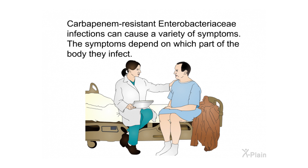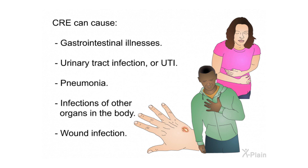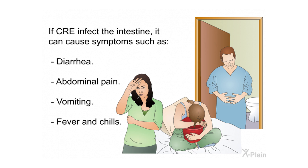CRE infections can cause a variety of symptoms depending on which part of the body they infect. CRE can cause gastrointestinal illnesses, urinary tract infections, pneumonia, infections of other organs in the body, and wound infections. If CRE infect the intestine, it can cause symptoms such as diarrhea, abdominal pain, vomiting, fever, and chills.